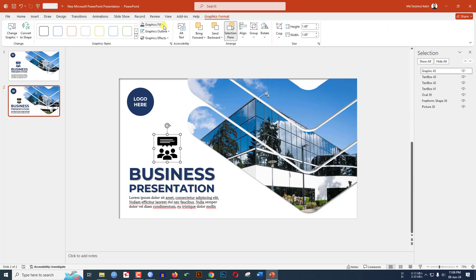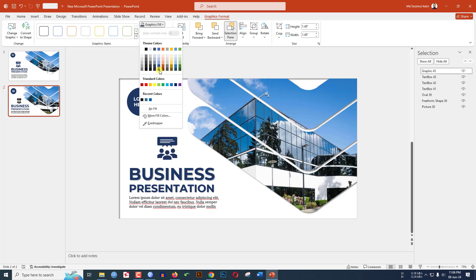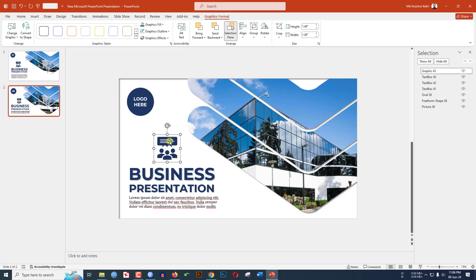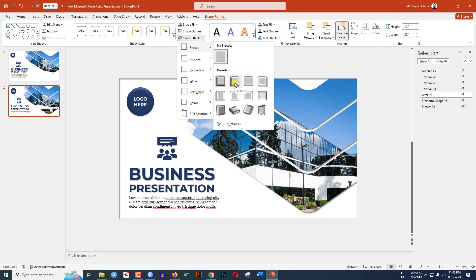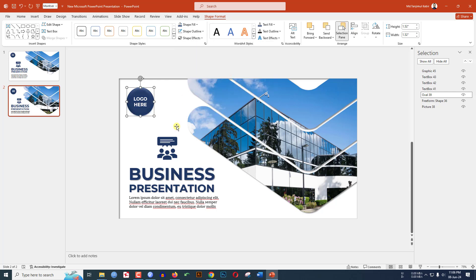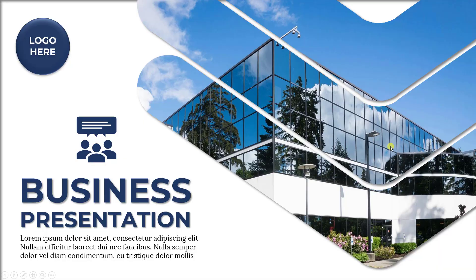Select the logo, go to Shape Format, Shape Effect, Preset, and select Preset 2. Now watch the slideshow — this is looking very beautiful. Hope you found this video helpful. If you liked it, please share it with your friends and family, and don't forget to subscribe. Thank you.